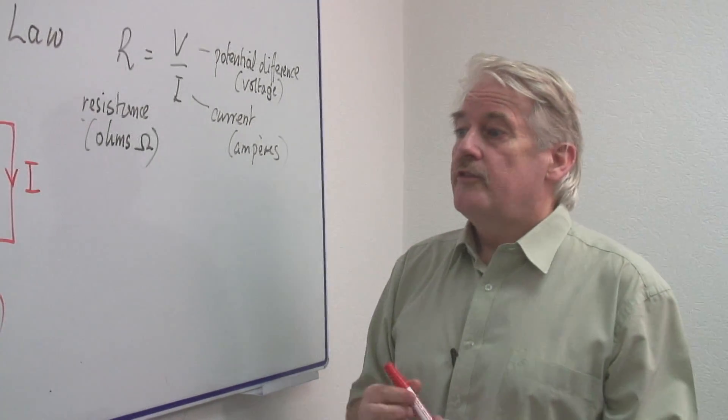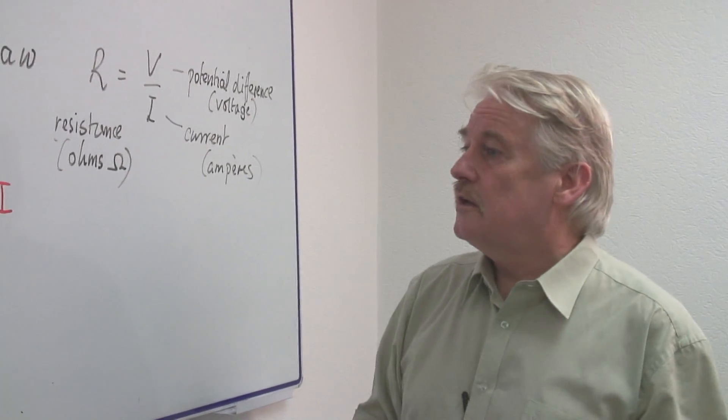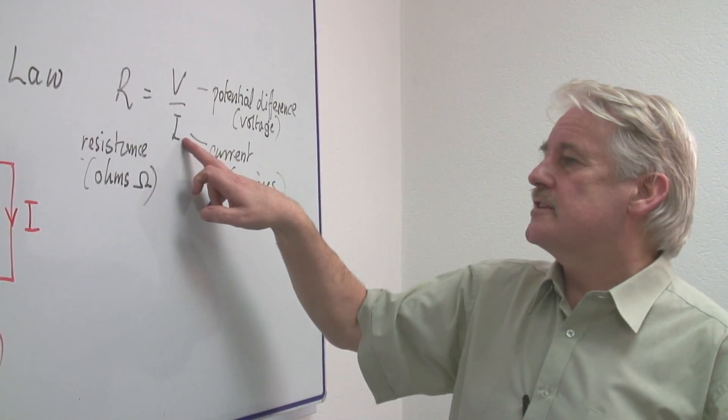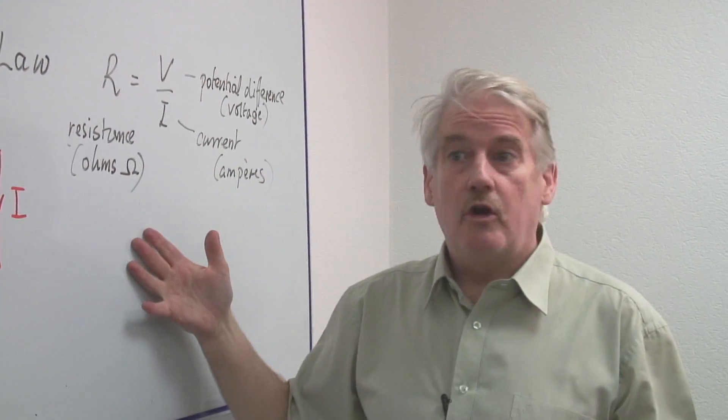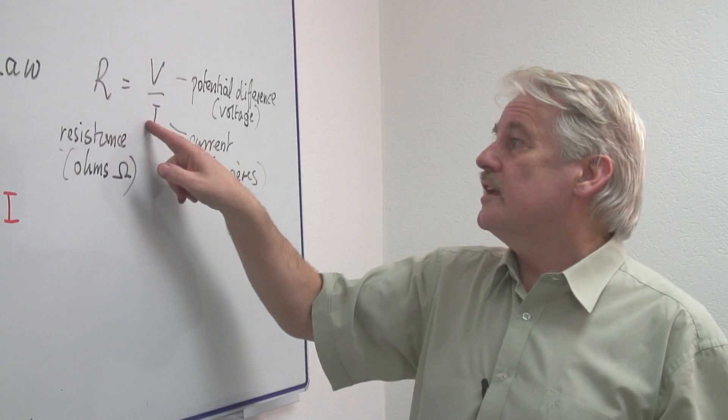And we know that the relationship between the resistance, the voltage, and the current is given by Ohm's law, R equals V divided by I.